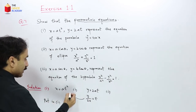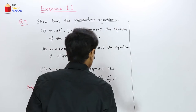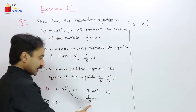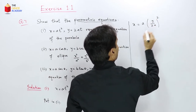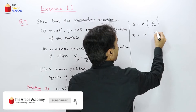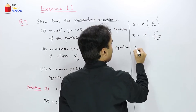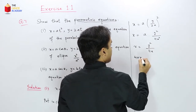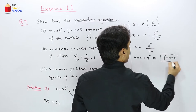Substituting t = y/(2a) into equation 1: x = a·(y/2a)² = a · y²/(4a²). Simplifying, one 'a' cancels, giving x = y²/(4a). Shifting 4a to the left: 4ax = y², so y² = 4ax — our required equation.